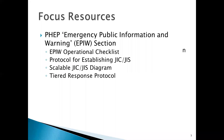The resources we'll focus on today are located within your FEP, your Public Health Emergency Plan, specifically under the section titled Emergency Public Information and Warning, or EPIW. The four tools we'll focus on are the Operational Checklist, the Protocol for Establishing a JIC or a JIS, a Scalable JIC-JIS Diagram, and the Tiered Response Protocol.